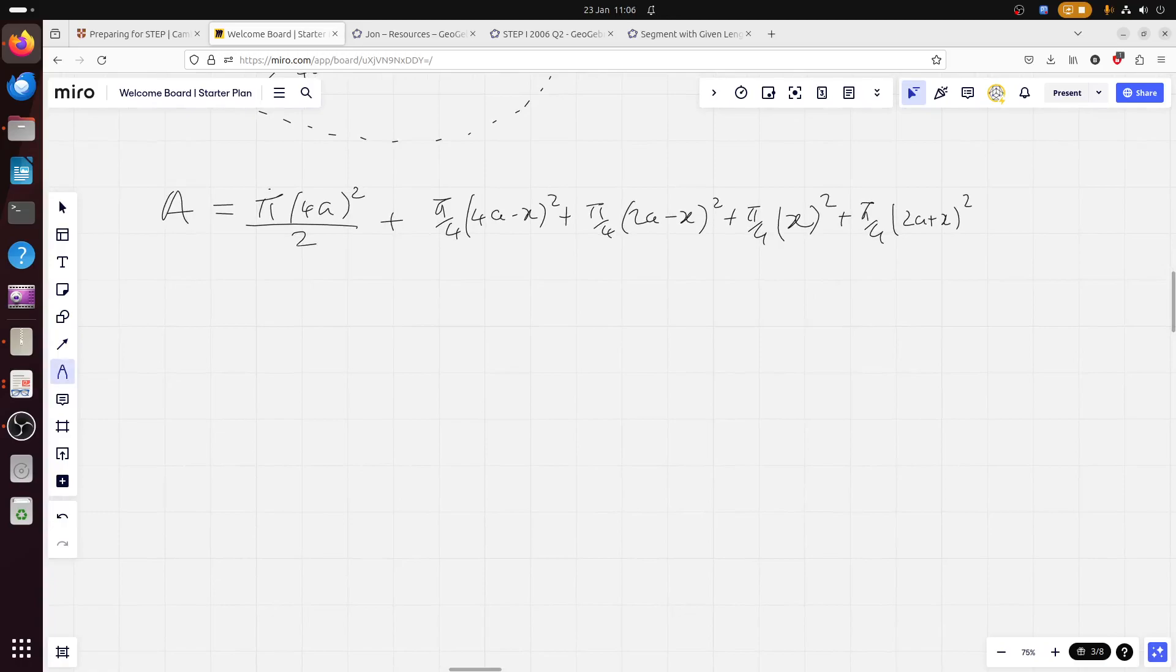Now, we've basically got the problem as, you know, in an algebraic kind of form, rather than a geometry kind of, well, lovely picture. OK, let's factorise out a pi over 4, because all the terms have got a pi. And if I double this, double the top, double the bottom, then that would be pi over 4 as well. So, that's 16a squared, doubled is 32a squared. Then here we're going to get 16a squared minus 8ax plus x squared. Here we're going to get 4a squared minus 4ax plus x squared. Here we're going to get an x squared. And lastly here we're going to get a 4a squared plus 4ax plus x squared.